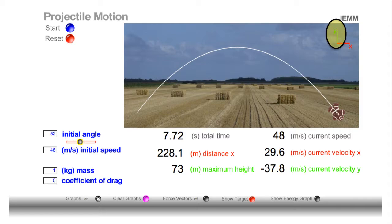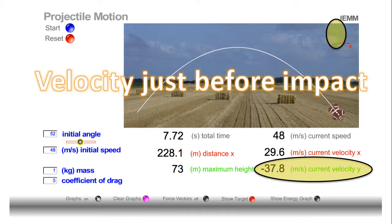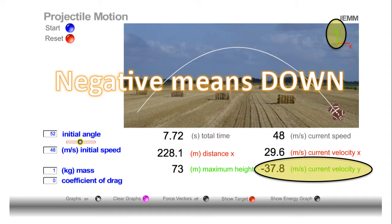Now let's pay attention to the Y direction. This row of information gives us some details about the Y direction. It tells us the maximum height of the object. In addition, it also tells us the current velocity in the Y direction. Now based on this diagram, this represents the velocity just before the impact. It's negative because the negative means that the object was moving down.